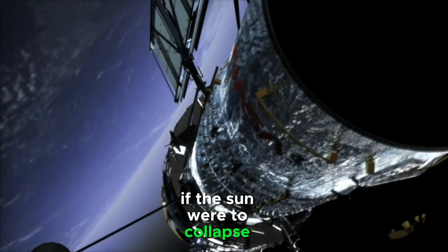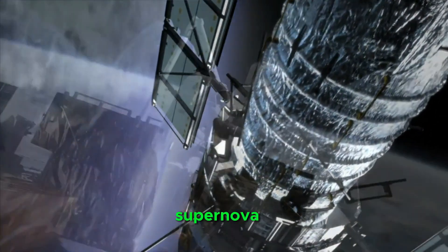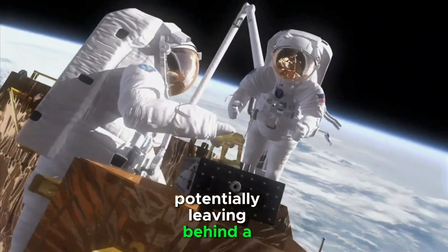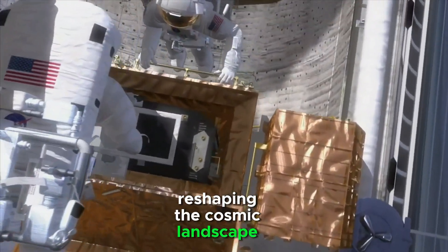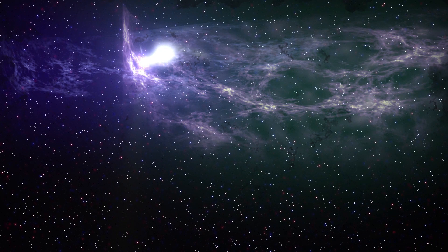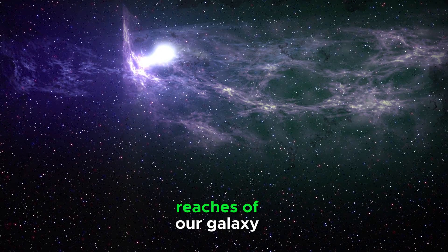If the Sun were to collapse, it would result in a dazzling supernova, potentially leaving behind a neutron star or a black hole. The consequences for our solar system would be profound, reshaping the cosmic landscape as we know it. The ripple effects would extend far beyond, leaving an imprint on the vast reaches of our galaxy.